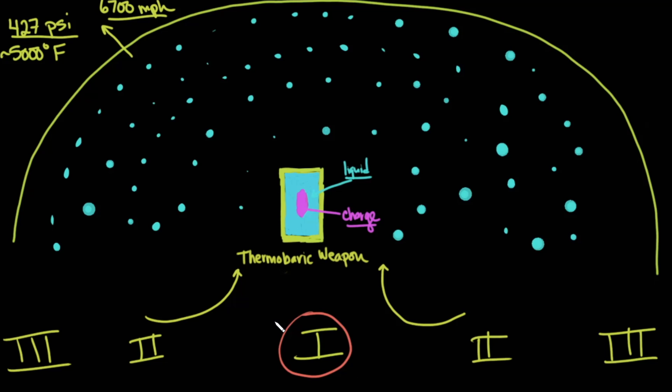In zone one, most of the people unfortunately are going to succumb to their injuries almost immediately. In fact, sometimes based on where the bodies are, there may not be bodies because they would be completely incinerated.